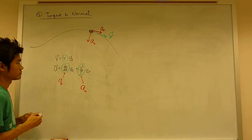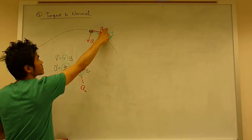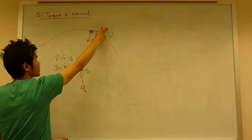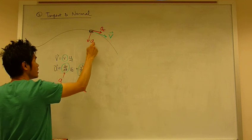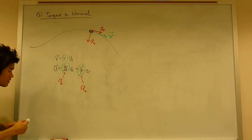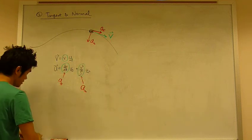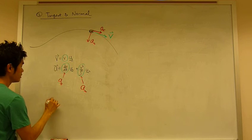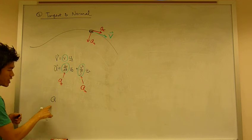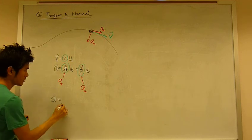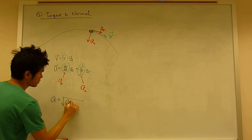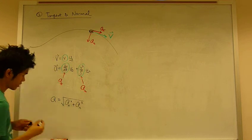So looking at this, acceleration has two components, AT tangent and AN for normal. Therefore, the magnitude of acceleration A is simply AT squared plus AN squared.